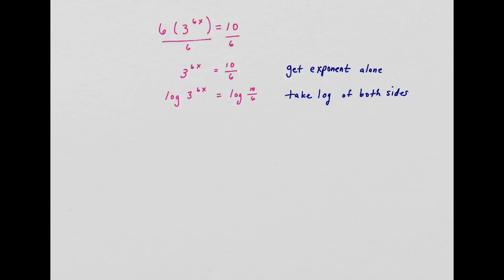Once we take the log of both sides, we can use that power property of logarithms to get that 6x out of the exponent and change it to multiplication.